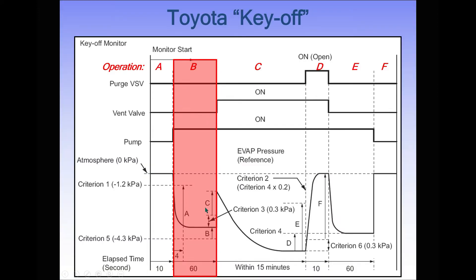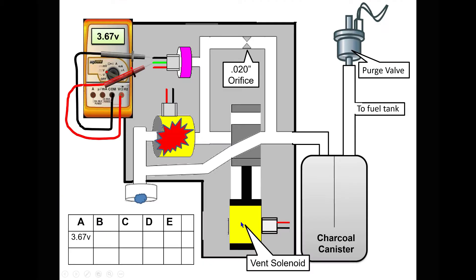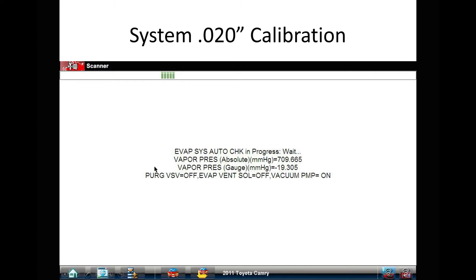Now we enter the calibration phase. It takes maybe a minute or so. The pump is going to energize. The pump now is pulling against this 20 thousandths orifice and my fuel tank pressure sensor is going to see that. Then it records that number. We see voltage here, but we're going to see 20 thousandths calibration on the scan tool. Purge valve off, vent valve off, vacuum pump on. Right now I developed 19.3 inches of water column inside this system.